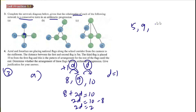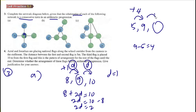For part b, we have 5, 9, and a box. The common difference in arithmetic progression must be the same. 9 minus 5 equals 4, so the common difference is plus 4. Therefore 9 plus 4 equals 13, so this box is 13.